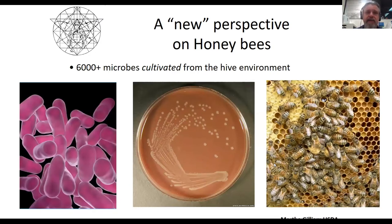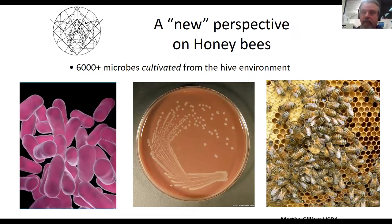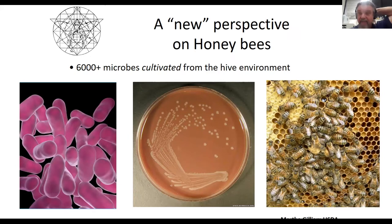Martha Gilliam did some incredible work early on. I'm now in Martha Gilliam's old lab. She worked with the tools available to her at the time — primarily enzyme characteristics. She would isolate a microbe and define its enzyme characteristics. She didn't enumerate how many microbes there were, and there wasn't a very good taxonomic system at the time, so she couldn't put it into a big database and compare which microbes were found in Arkansas versus China with bees across the world. She found 6,000 microbes, which was fascinating, but virtually nothing on how abundant microbes were in different environments.